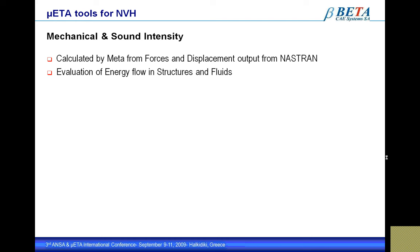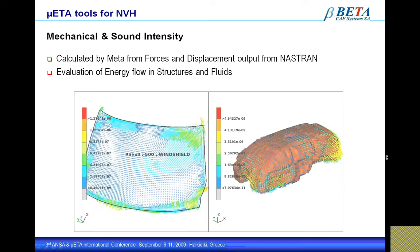Mechanical and sound intensity are physical values not given directly by NASTRAN, but MetaPost calculates them based on the forces, displacements, and outputs from NASTRAN Solution 111. The visualization helps investigate the energy flow in structures — such as on the windscreen — and in fluids such as the cabin cavity. It helps identify sources of vibration and noise in order to take the appropriate countermeasures. The example shows the energy flow on the windscreen at 50 Hz and the same for the cabin fluids.